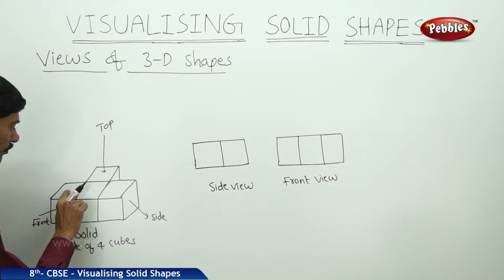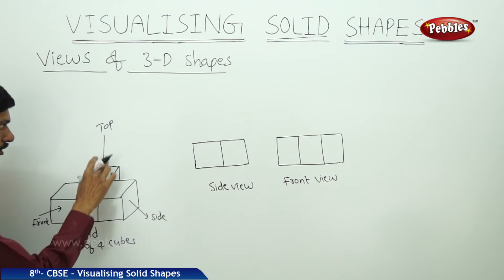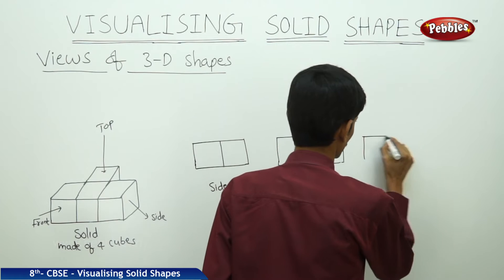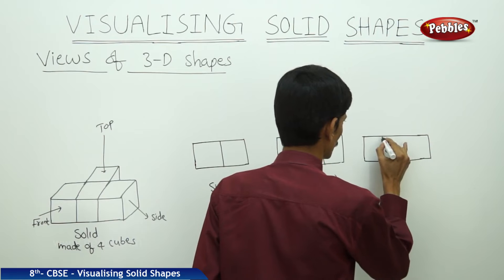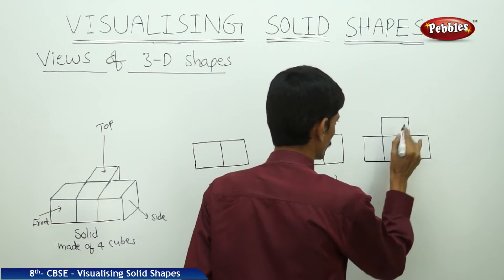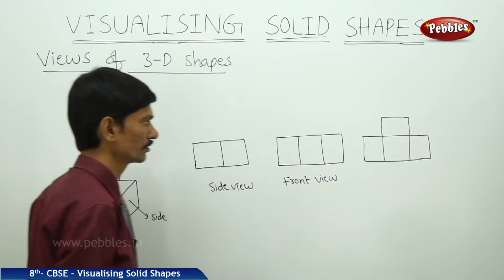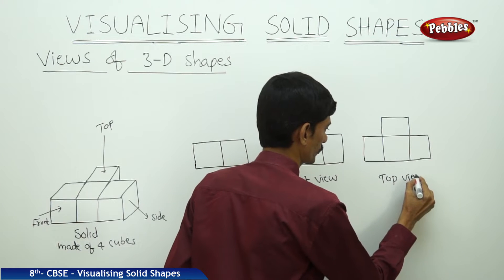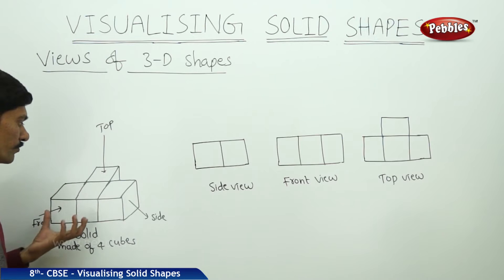If you observe from the top, we can find four cubes, so we draw four squares. These four squares represent four cubes seen from the top. These are the different views of the solid shape formed by four cubes.